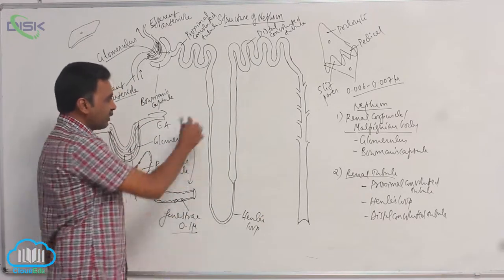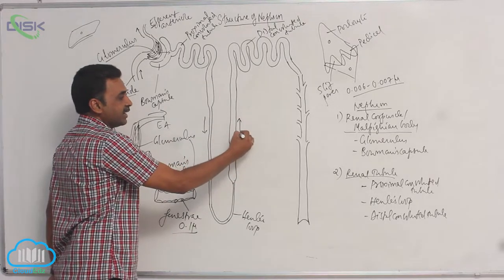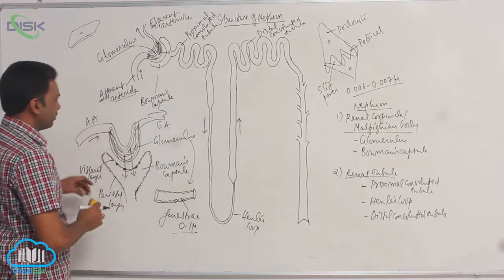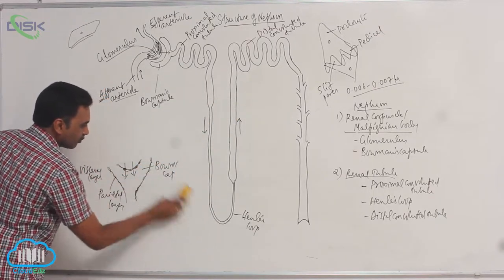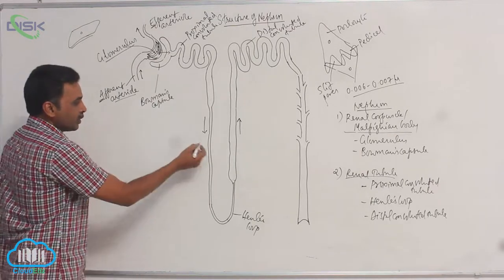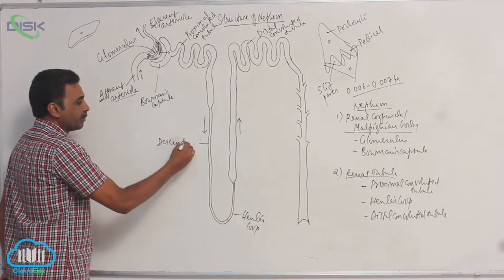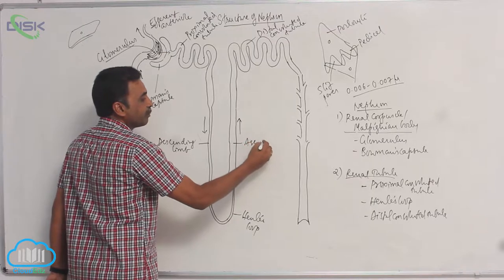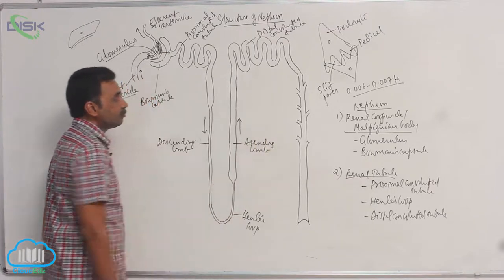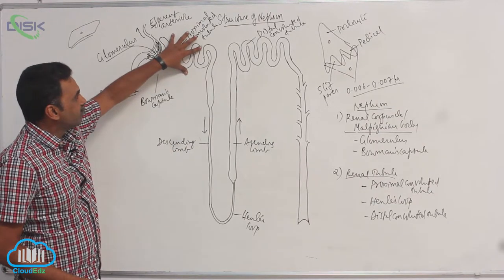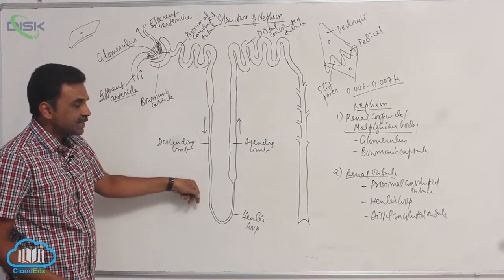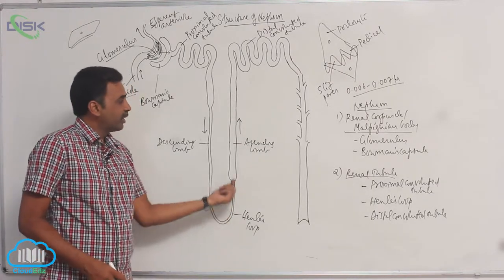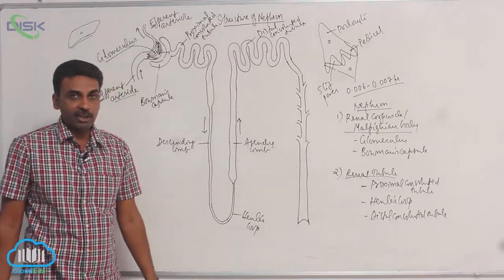Henle's loop has two limbs — the descending limb and the ascending limb. The proximal convoluted tubule opens into the descending limb, which makes a hairpin-like bend called Henle's loop. Then the ascending limb opens into the distal convoluted tubule.